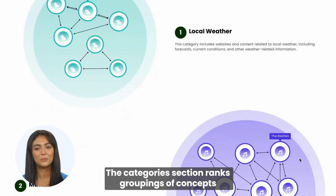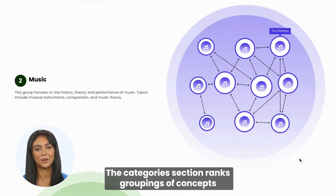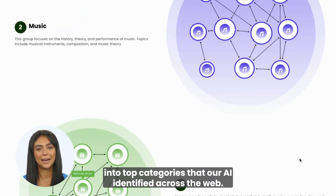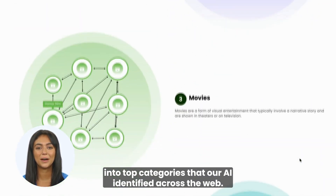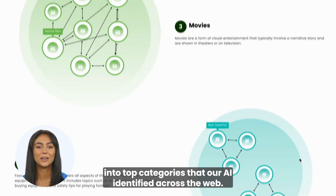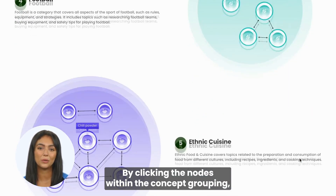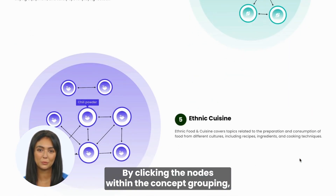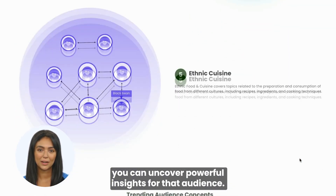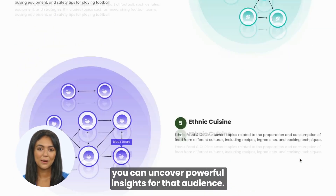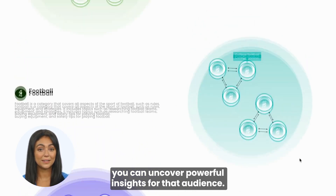The category section ranks groupings of concepts into top categories that our AI identified across the web. By clicking the nodes within the concept grouping, you can uncover powerful insights for that audience.